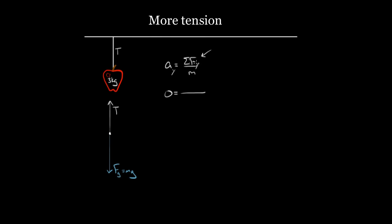Tension is vertical, so I put tension in the net force equation. I'll call upward positive, so tension is positive and mg is negative — minus mg. I divide by the mass, then solve for tension. I multiply both sides by m and get zero equals T minus mg. Solving for T gives T equals mg.